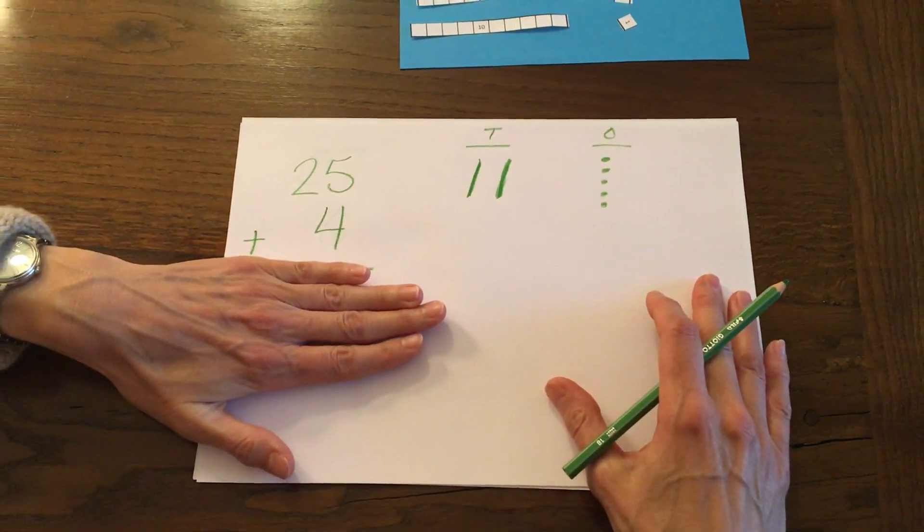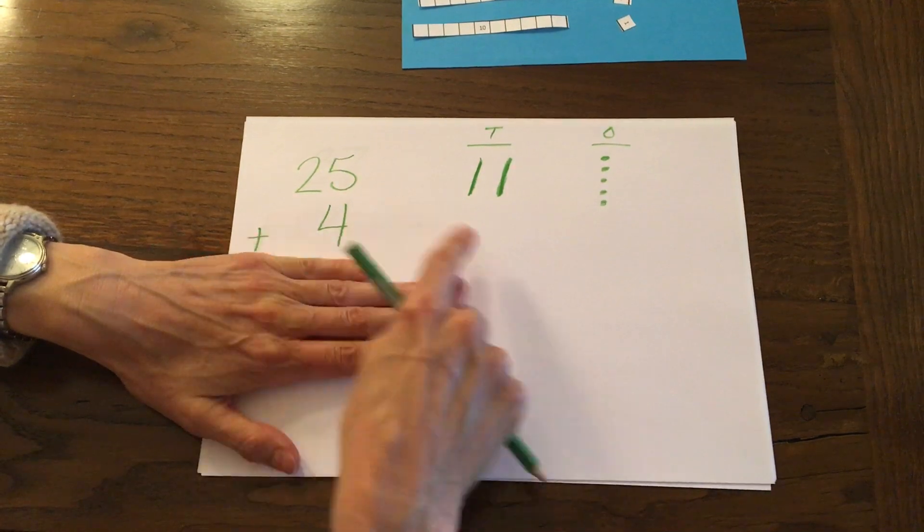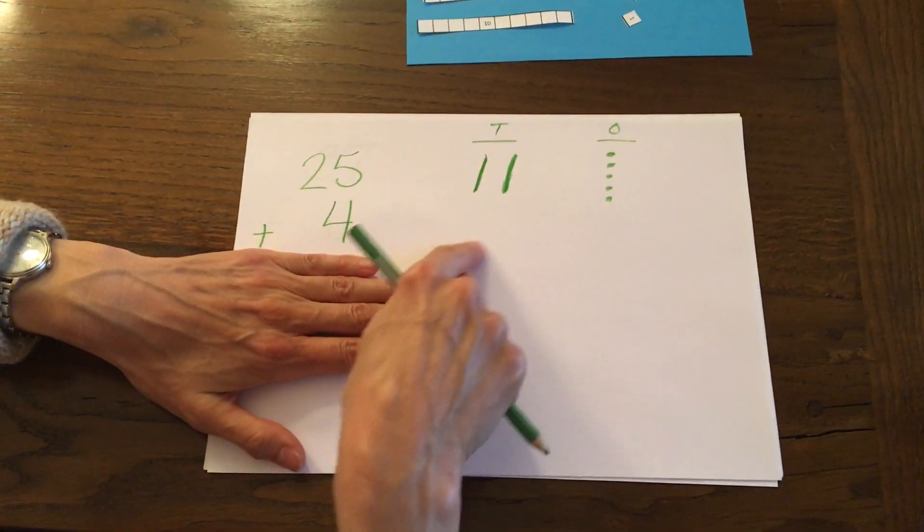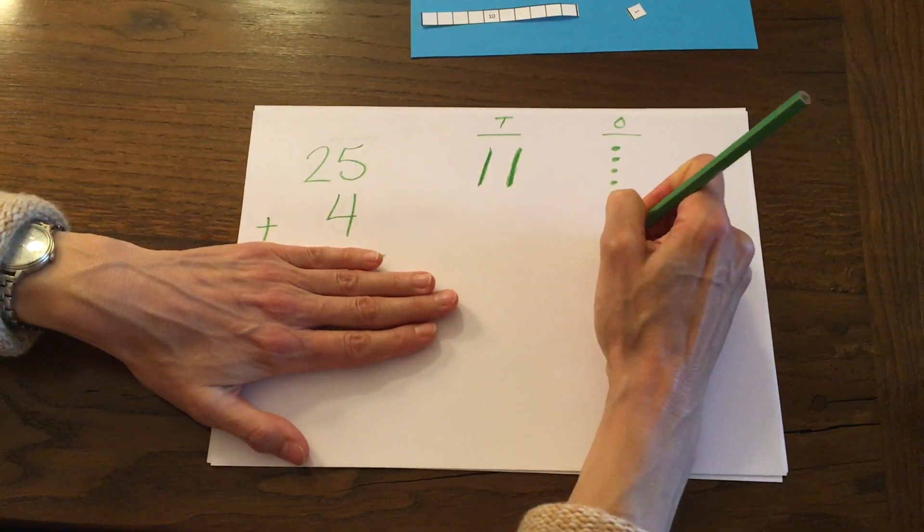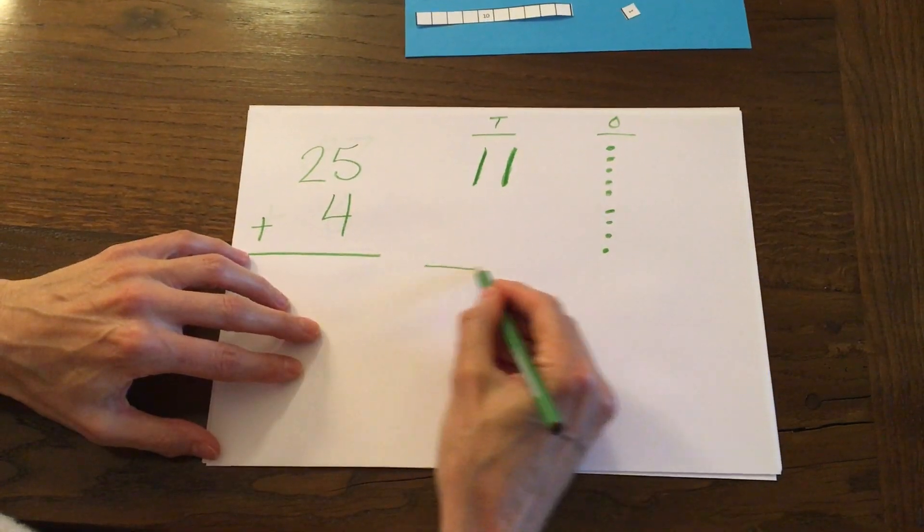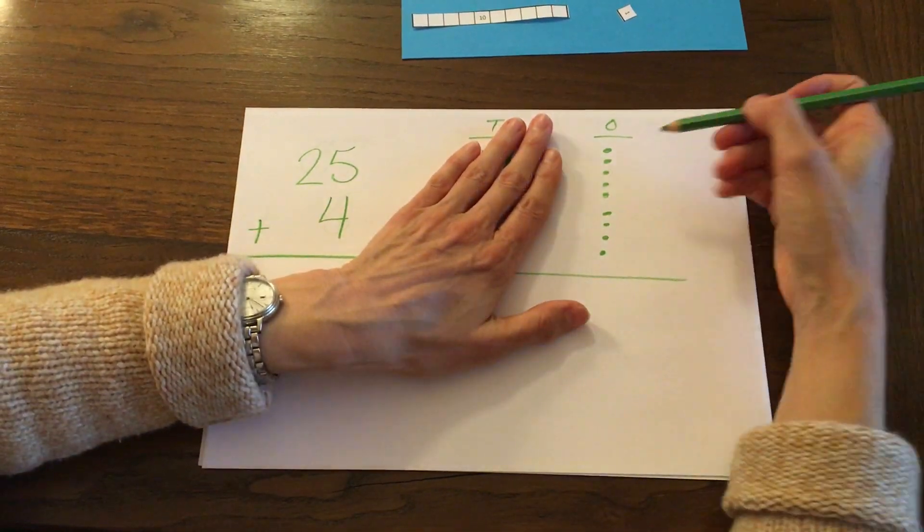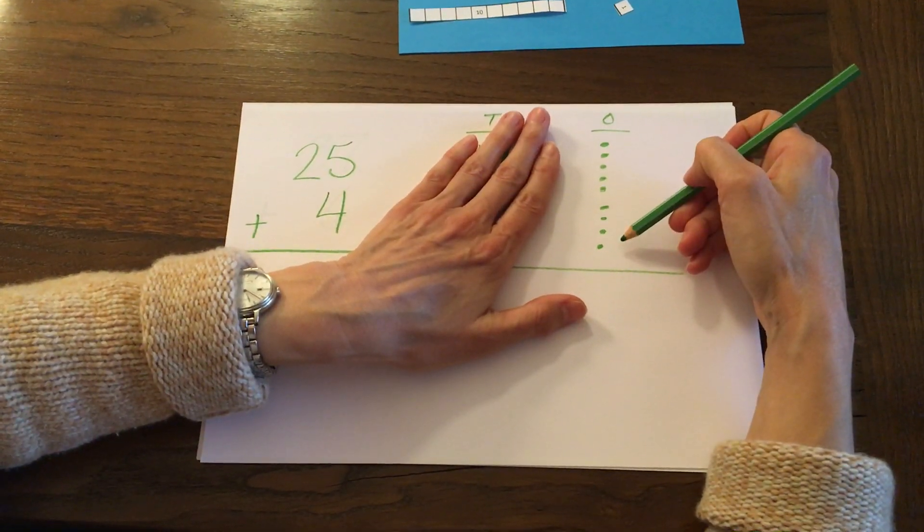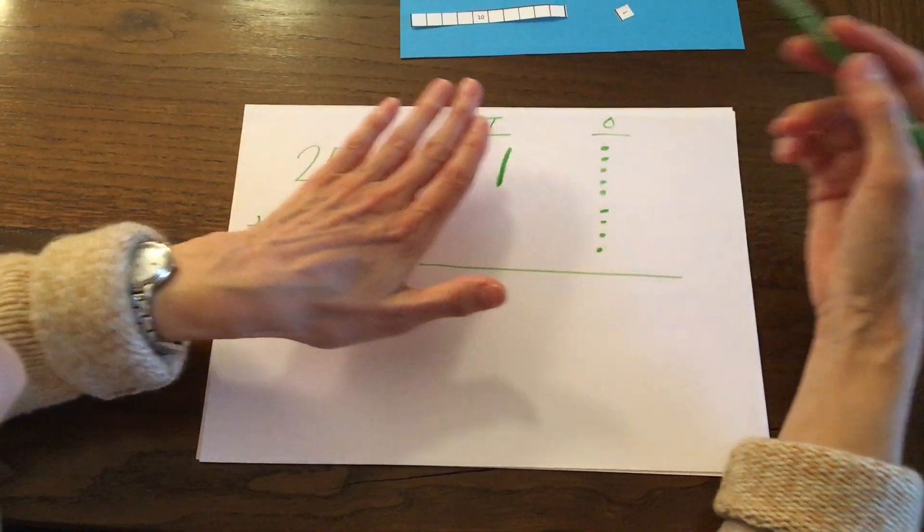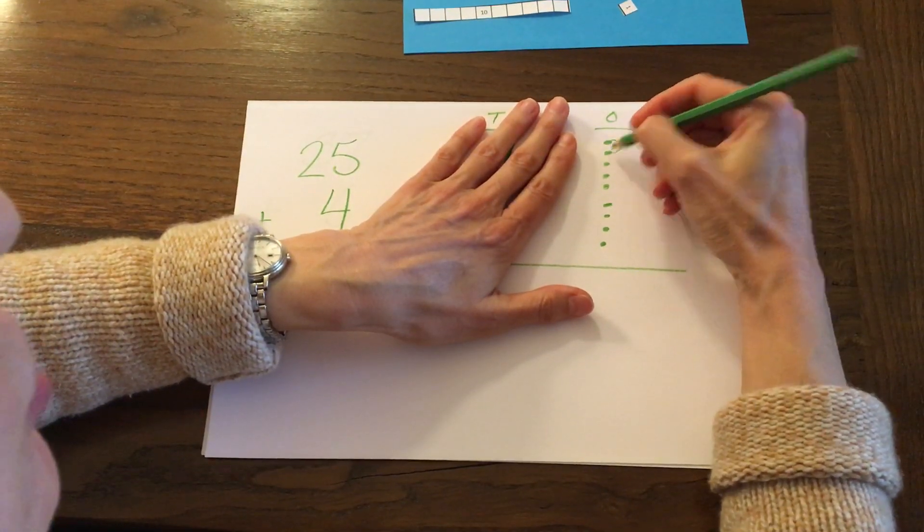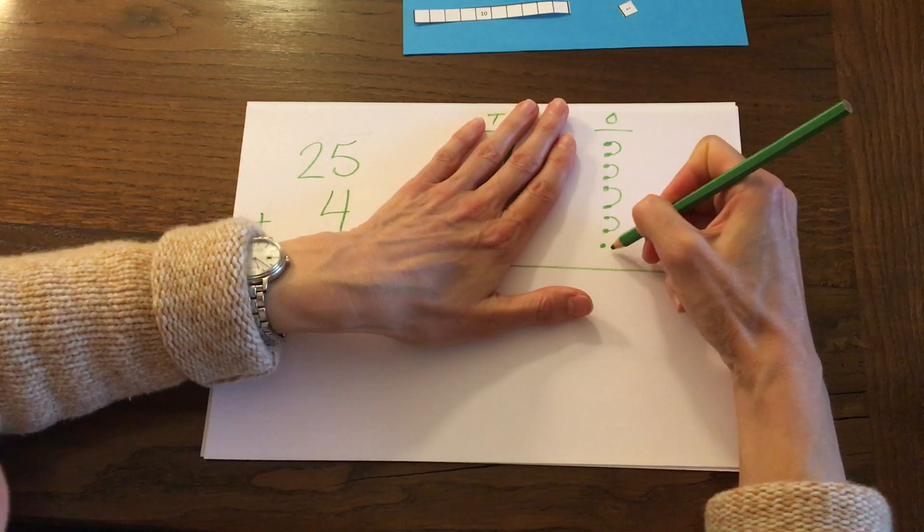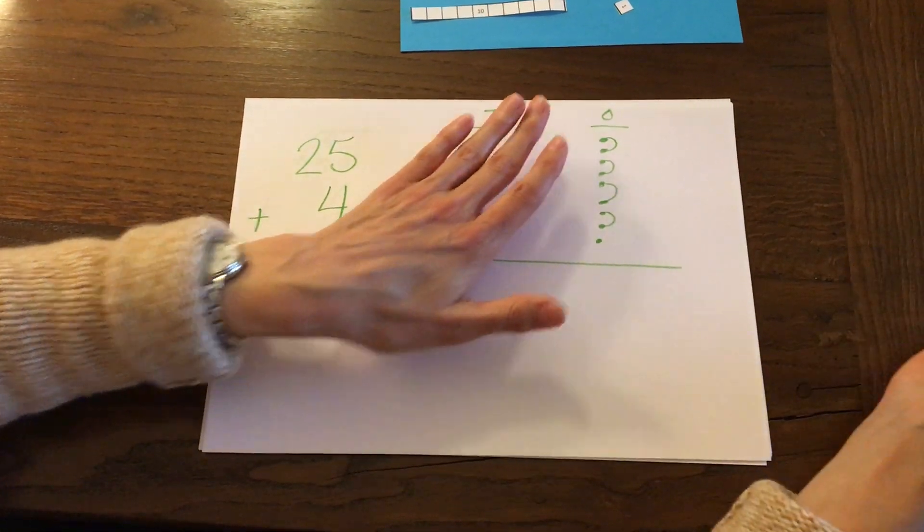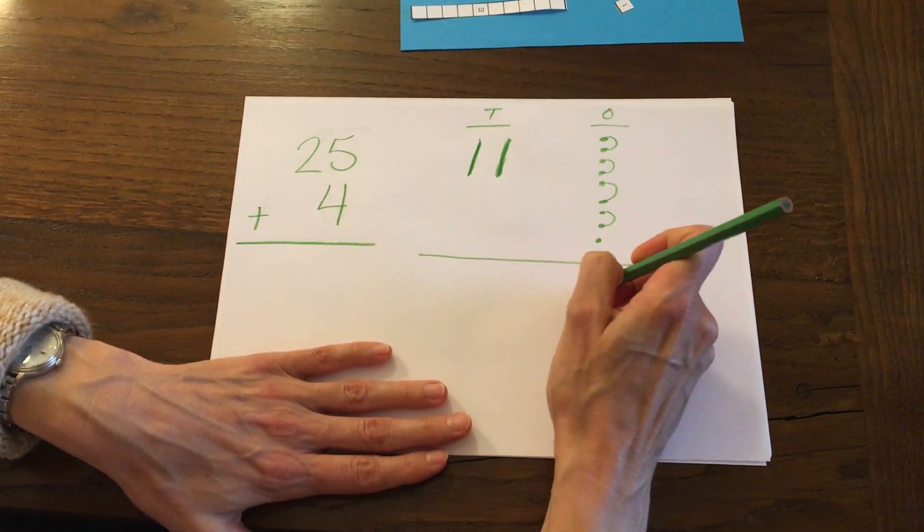Now let's do plus 4. There are no tens so I don't draw anything over here, but I'm going to draw four dots for the ones. Now let's check, do we have ten ones to trade and put another ten over here? Let's check. Two, four, six, eight, and one more makes nine.